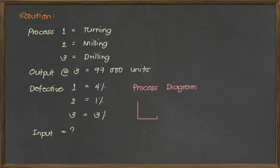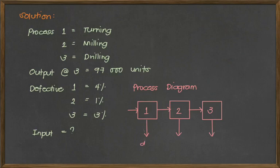Now this is our process diagram. So since this is a straight operation, we can assume that the process is sequential. So we have three processes and their corresponding defective units or defect rates.